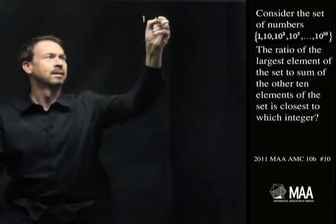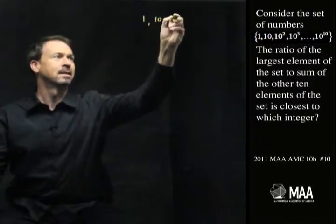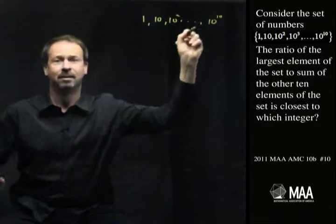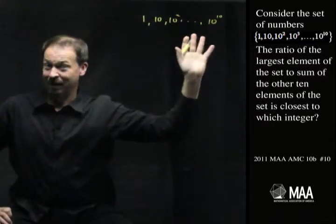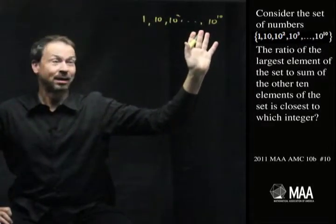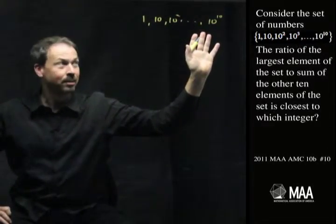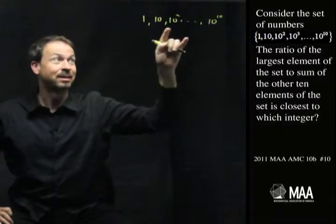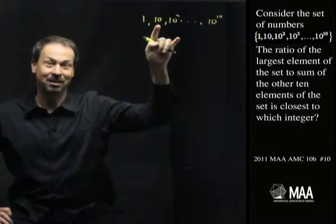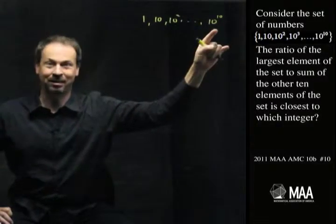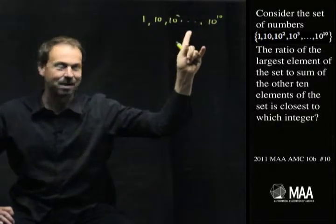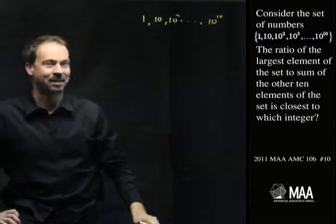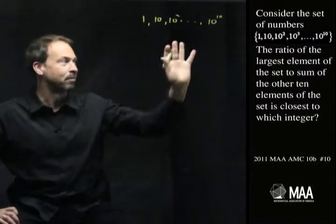1, 10, 10 squared, up to 10 to the 10th. I already realized I just said something incorrect. Is that actually 10 numbers? No, it's actually 11 numbers: 10 to the 0, 10 to the 1, up to 10 to the 10. All right, it's 11 numbers. Got that sorted out. We've got 11 numbers.